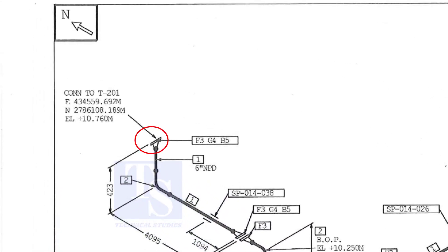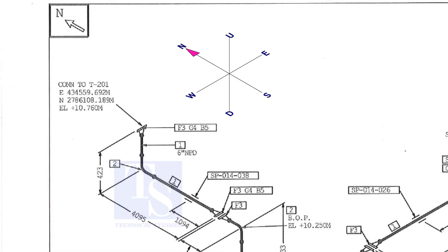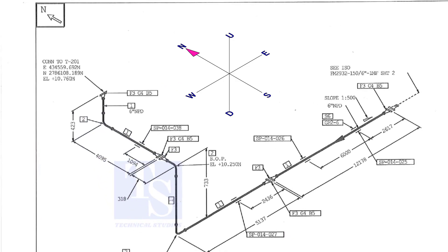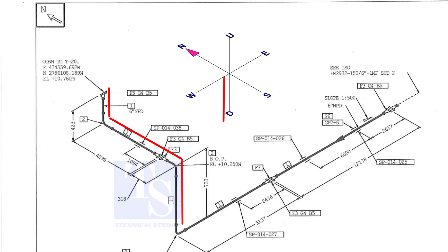We are going to bend the wire from here. Hold a wire vertically. The length shall be approximately 600 millimeters. Bend the wire to the north-south direction 90 degrees. Bend the wire 90 degrees downwards.